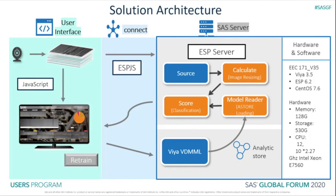This is our system architecture. We use a SAS Viya 3.5 demo image from the EEC Demo Center to build the system. The user interface is designed for business users with JavaScript. When video comes in, JavaScript collects the pictures from the video and sends them to the ESP server through ESP.js. The image string is then loaded into an ESP source node. A calculate node does image resizing and sends frames to the score node, where pictures are scored with our AStore file. This AStore file is loaded from the model reader node. In this demo we show four types of defects, but our capability is much broader than that. After scoring, the results are sent back to the UI.